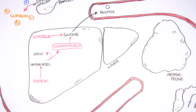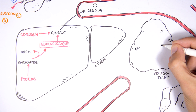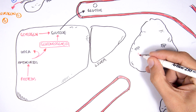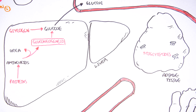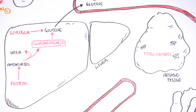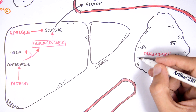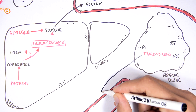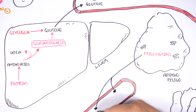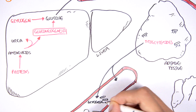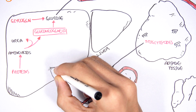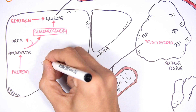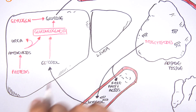In order for the liver to keep up with the glucose demand, adipose tissue will begin to break down its triglyceride stores into free fatty acids and glycerol. The glycerol will enter the liver and feed into gluconeogenesis to create more glucose.